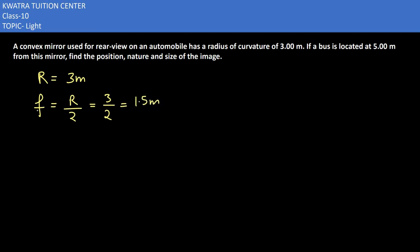Now, the problem states that a bus is located 5 meters from this mirror. So what does this mean? The bus acts as an object in this case.